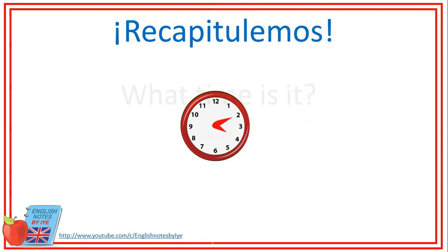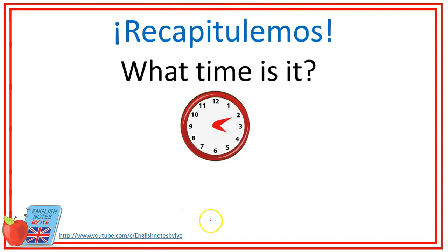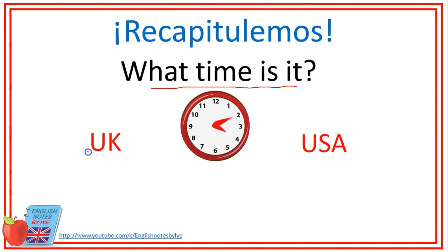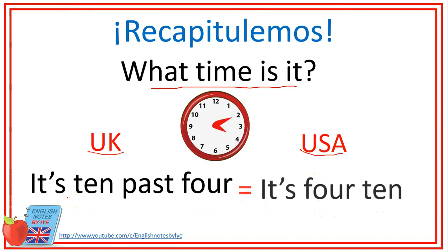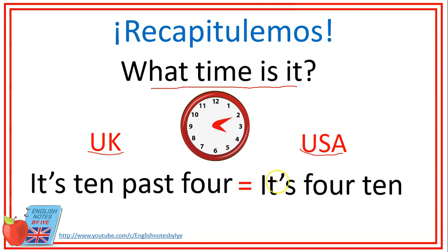Vamos a recapitular. En la clase de hoy vimos la pregunta para la hora: what time is it? Para responder tenemos dos opciones — la opción británica o la opción americana. En la opción británica diríamos it's ten past four, y en la opción americana diríamos it's four ten. En ambas utilizamos el pronombre it con el verbo to be is, su contracción it's. Podemos decir son diez pasadas de las cuatro, o son cuatro y diez.